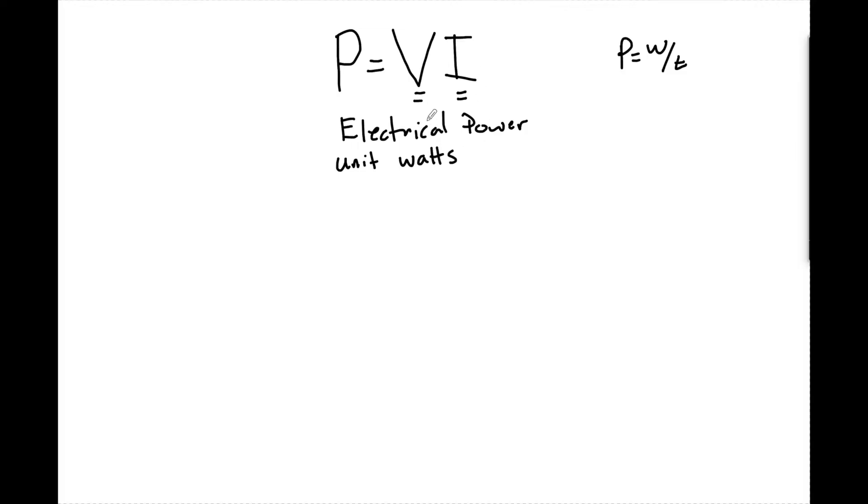So essentially what we have to do is we have to use Ohm's law and remember that Ohm's law is equal to V equals IR where V is the potential difference, I is the current, and R is the resistance. Now this can be applied at the battery for total power or this can be applied at each and every resistor.